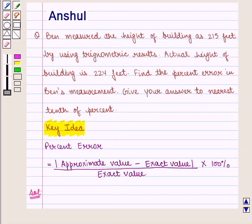In this question, we are given that the approximate height of the building calculated by Ben is equal to 215 feet, and the exact height, or we can say the actual height, of the building is given as 224 feet.